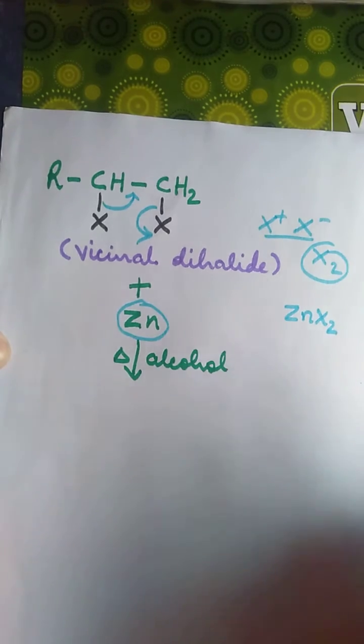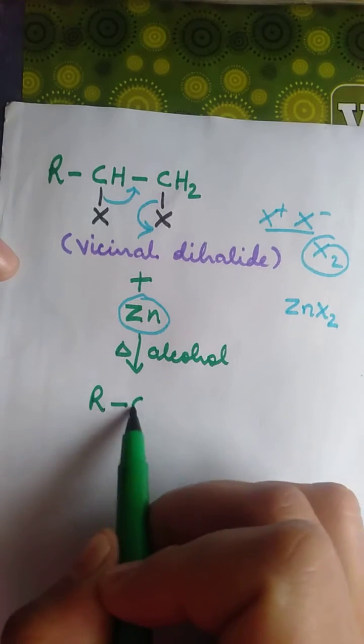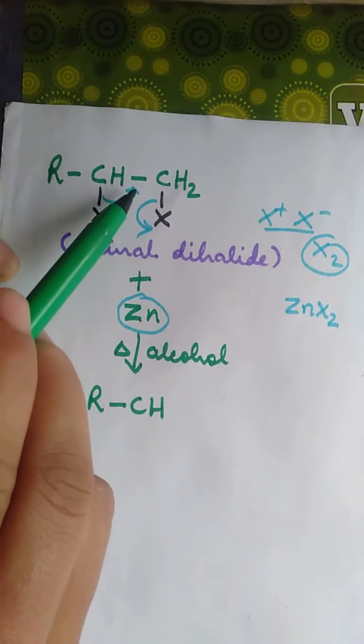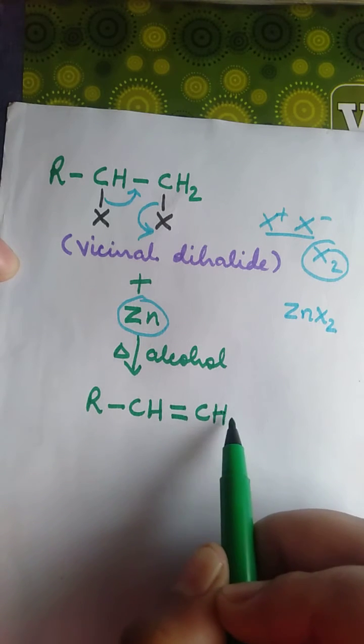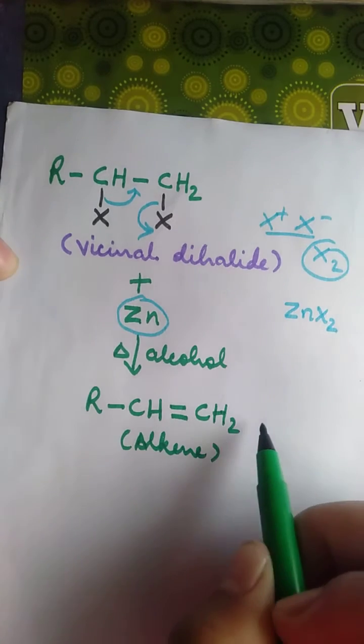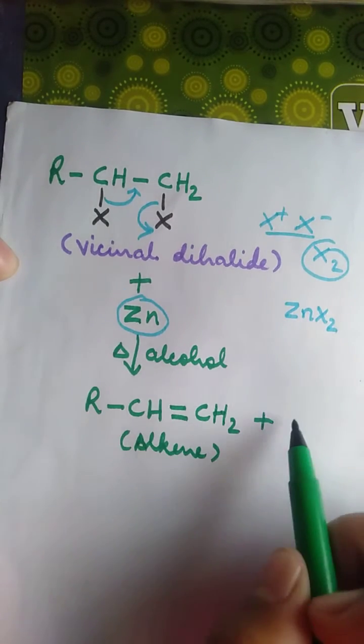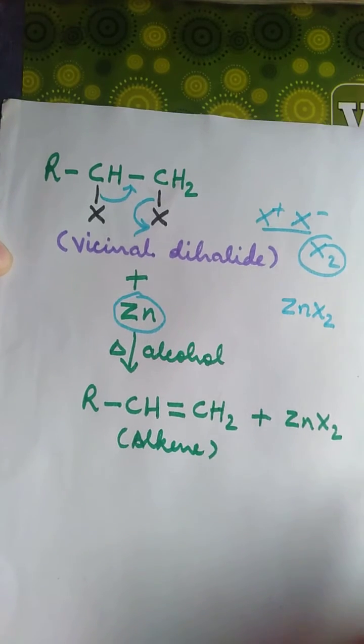Zinc halide. So we have R-CH, here we have double bond, CH2. This is alkene, and zinc halide. I hope it is clear.